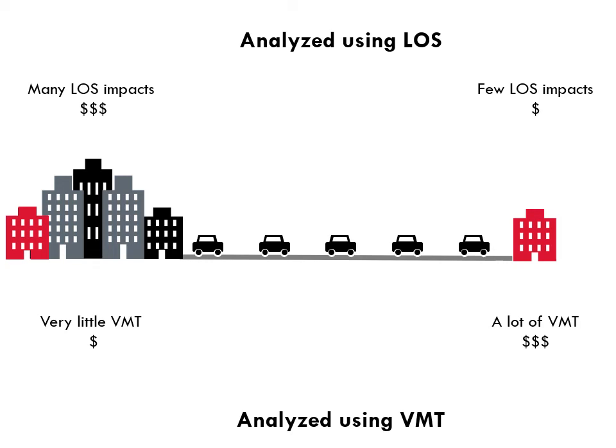What about at the fringe? When we analyze the fringe project with level of service, there are few LOS impacts and the developer doesn't have to spend much to mitigate their effects. If we used VMT instead, we would see that the project generated quite a lot of VMT. Driving is the only option at that location and it is far from everything, so trip lengths are long. Developers would have to pay quite a lot to mitigate their VMT effects on the fringe.